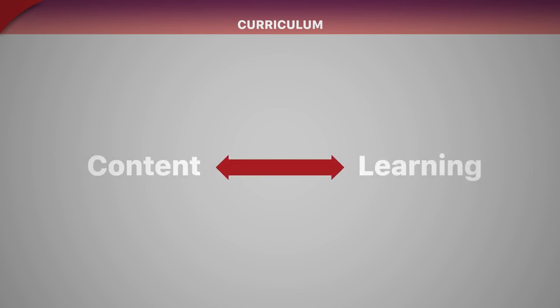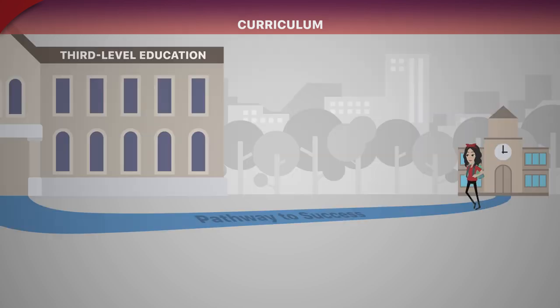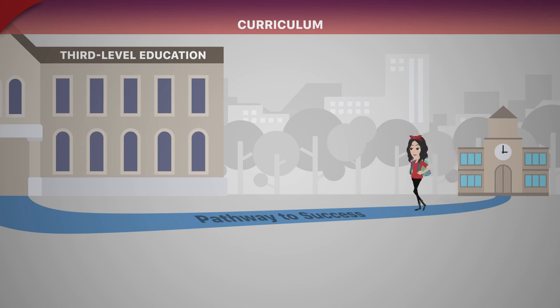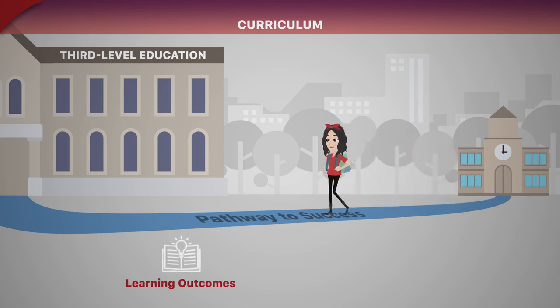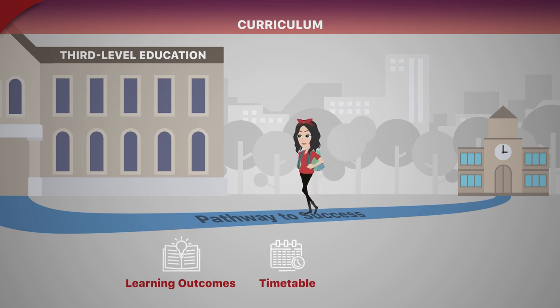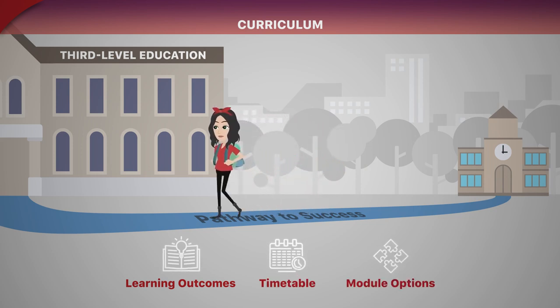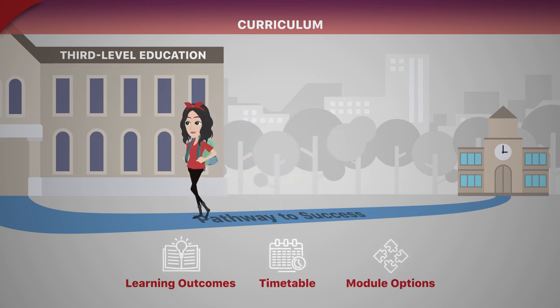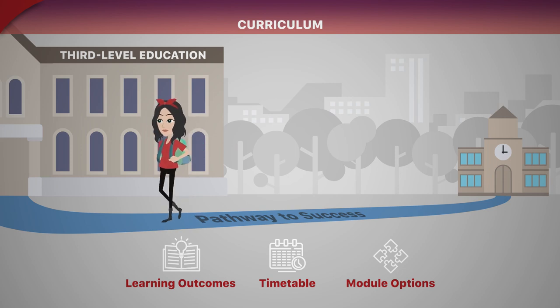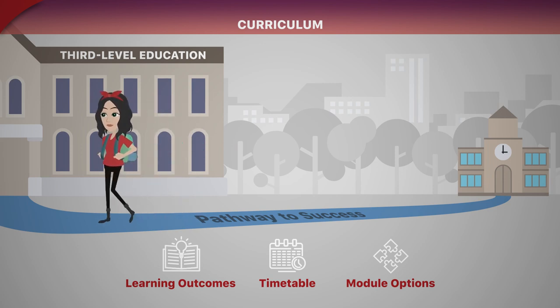Curriculum: the way content and learning is organised on your course and modules. This includes supporting transitions to learning at third level, well-defined learning outcomes, timetable and module options, and a clear pathway to progress from year to year and ultimately complete the course.